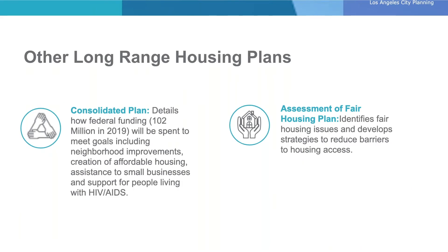HCID is also currently working to update the consolidated plan, which details how federal funding will be spent to meet goals set by the U.S. Department of Housing and Urban Development for the creation of affordable housing, assistance to small businesses, and people living with HIV and AIDS. HCID also takes the lead on the assessment of fair housing, required under federal law, which identifies fair housing barriers and develops strategies to ensure housing access for all. The goals, objectives, policies, and programs in the housing element, consolidated plan, and assessment of fair housing will be integrated as much as possible to ensure the city has a cohesive and unified vision for housing and community development.